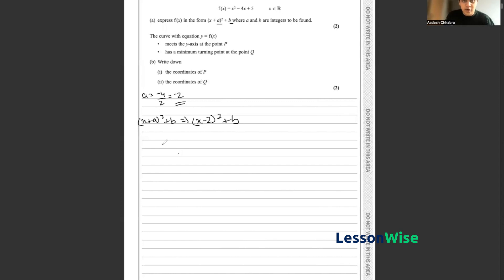So in essence, we know that (x - 2)² + b would be exactly the same as x² - 4x + 5.